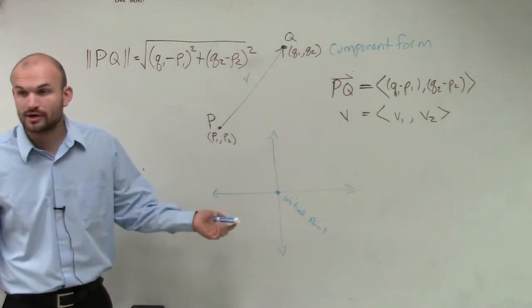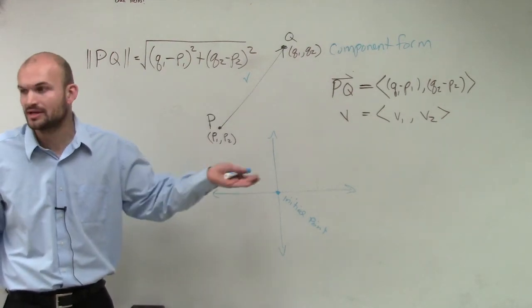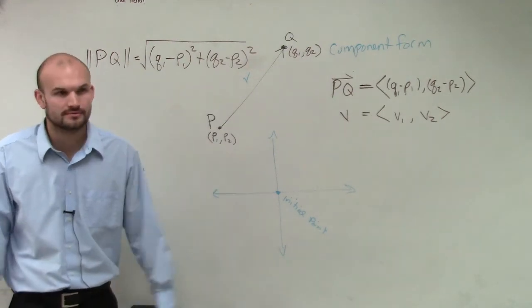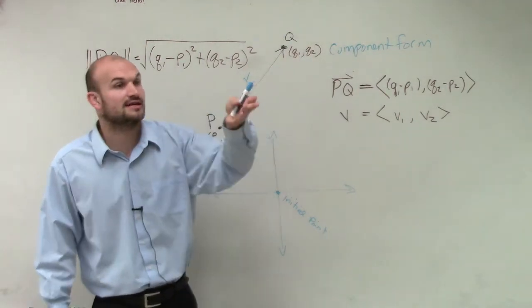If you're dealing with coordinate points on an x and y plane, it's the square root of x2 minus x1 squared plus y2 minus y1 squared. But now we're dealing with our q's and p's because that's what our directional line segment is.